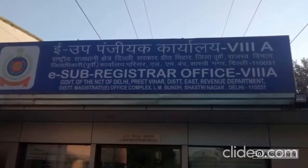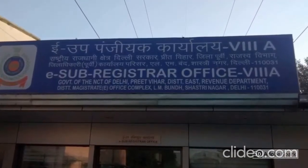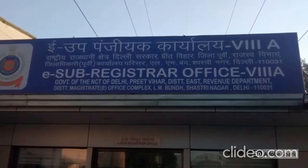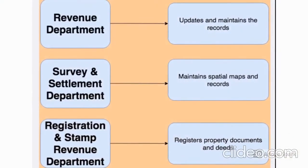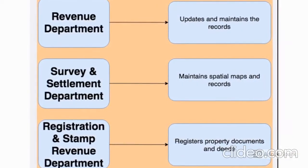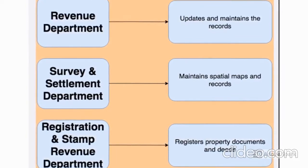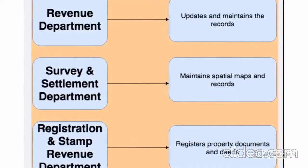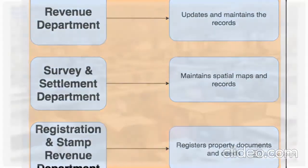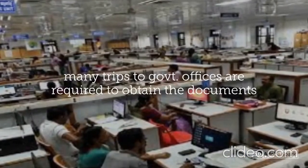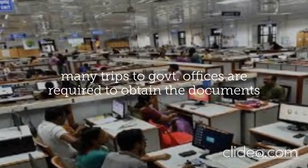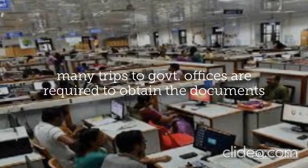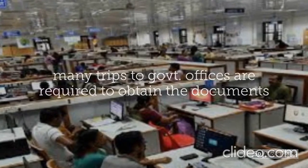The registration of documents is done at the registration and stamp revenue department by the sub-registrar. These departments work in a standalone manner. This often leads to a lot of mismatch in the data across these departments, leading to difficulties in property registration as it becomes very difficult for people to access this data. They would have to visit many departments to get hold of the appropriate documents.